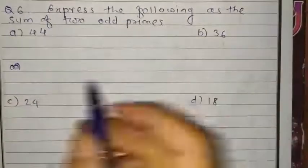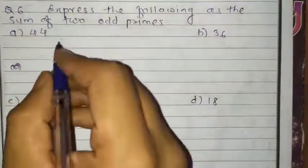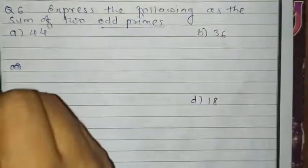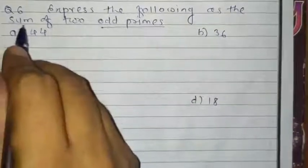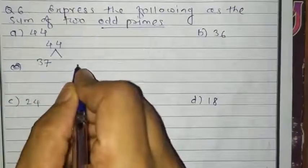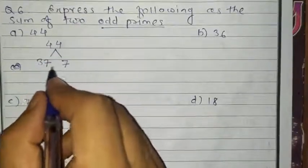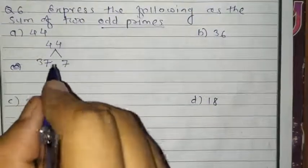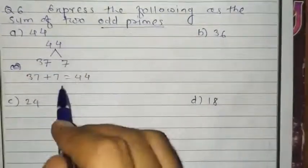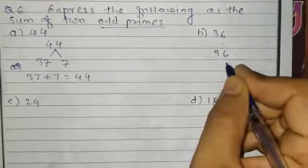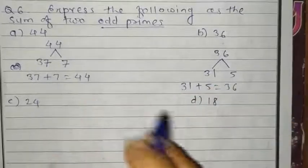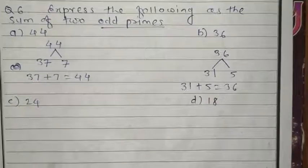In question number 6, express the following as the sum of 2 odd primes. We cannot include 2 because 2 is even. First number is 44. Break it into 2 parts: take 37 and 7, because 37 plus 7 is 44. You can take any 2 numbers — there is no restriction. This answer may vary from one student to another. Part B is 36: take 31 and 5, because 31 plus 5 is 36. These odd primes are 31 and 5.